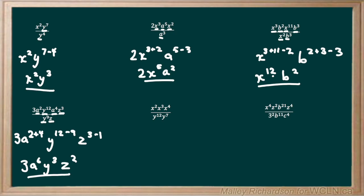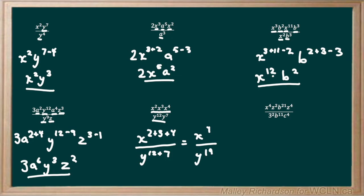Next we have x to the power of 2 times x to the power of 3 times x to the power of 4, all over y to the power of 12 times y to the power of 7. Everything on the numerator has the same base and everything on the denominator has the same base. We have x to the power of 2 plus 3 plus 4, divided by y to the power of 12 plus 7. Even though the y's are in the denominator, they are still multiplied together so we add those exponents. Our final answer is x to the power of 9 all over y to the power of 19.